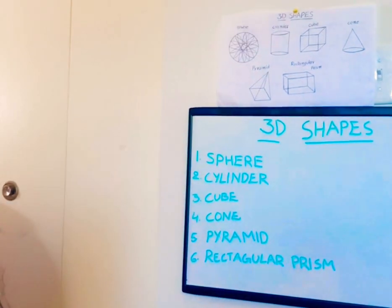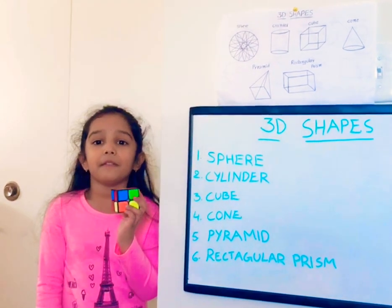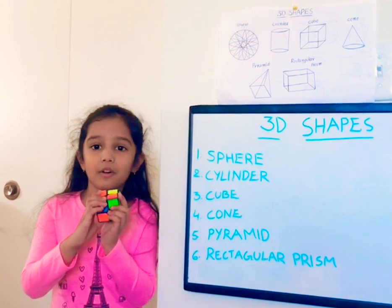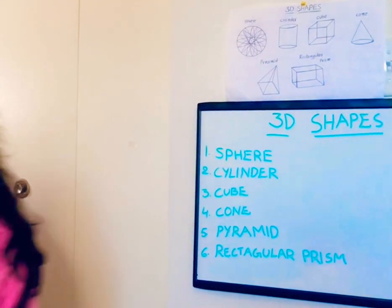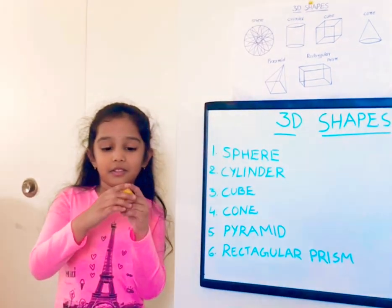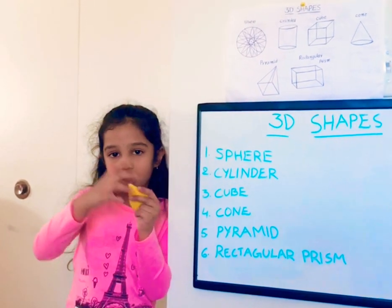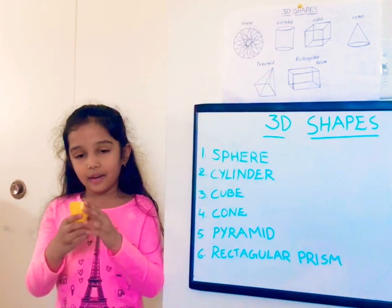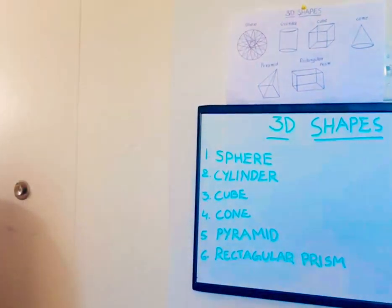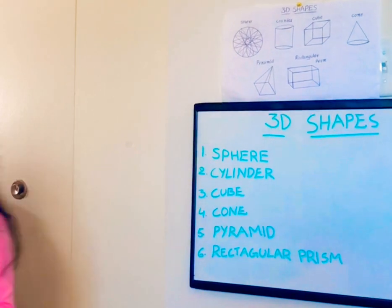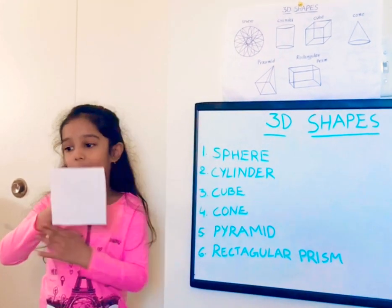Next is cube. The 3D shape of a square is called a cube. Next is cone. A cone has an edge on the top and a circle on the bottom. Then pyramid — a pyramid has an edge on the top and a square on the bottom.